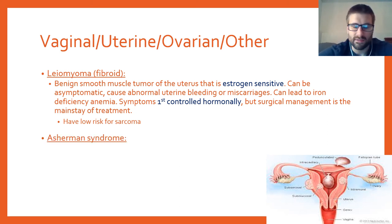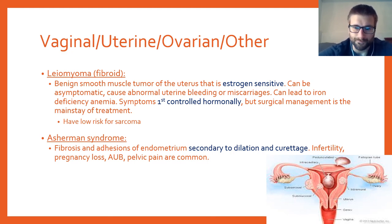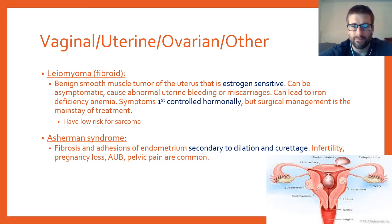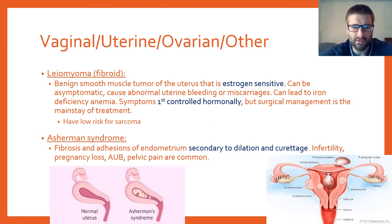Asherman syndrome is fibrosis and adhesions of the endometrium, and the key buzzword cause is dilation and curettage (D&C). Patients typically present after a uterine procedure with infertility, pregnancy loss, abnormal uterine bleeding, or non-specific pelvic pain. Questions may ask either the diagnosis given a D&C history, or what procedure caused Asherman syndrome given the diagnosis. Imaging shows adhesions connecting the endometrium inside the uterine cavity.